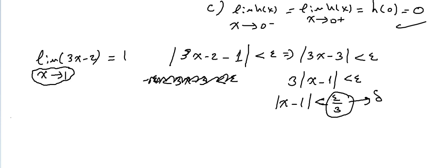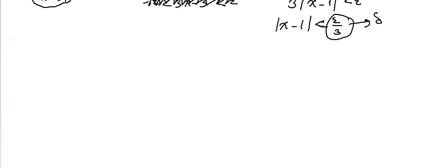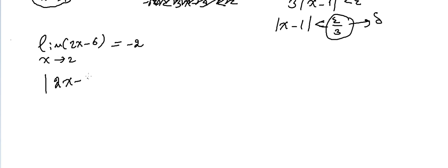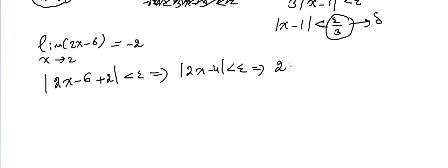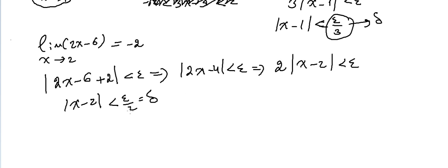Let's do one more: prove that the limit of 2X minus 6 as X approaches 2 equals minus 2. We compute the absolute value of (2X minus 6) minus (minus 2) = absolute value of 2X minus 4 less than epsilon. Taking 2 as a common factor, we get 2 times the absolute value of X minus 2 less than epsilon, so the absolute value of X minus 2 less than epsilon over 2. Thus Delta equals epsilon over 2.